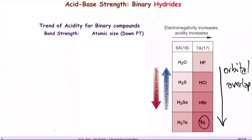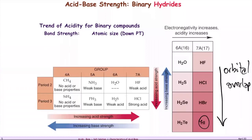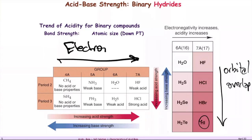When you go across the periodic table, you're looking at electronegativity. Stronger electronegativity produces a greater degree of polarization.